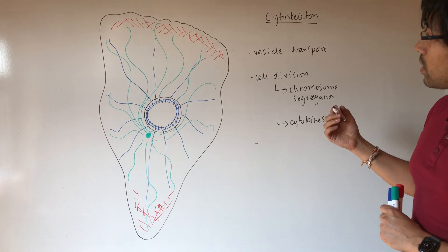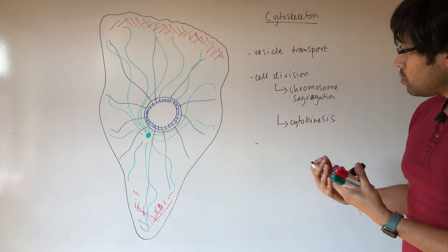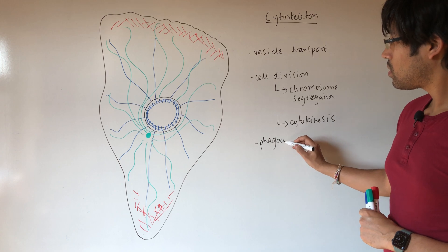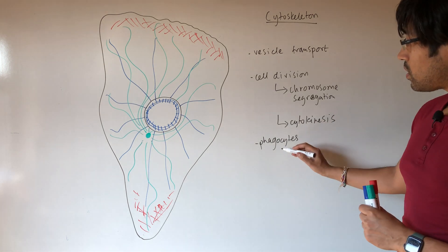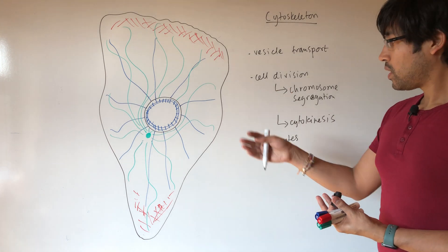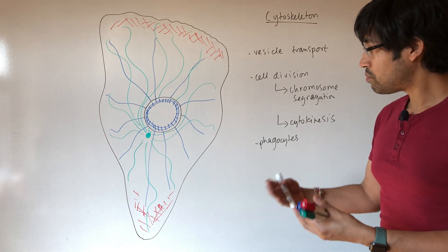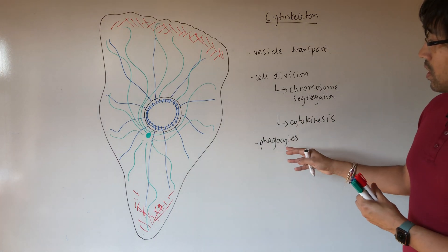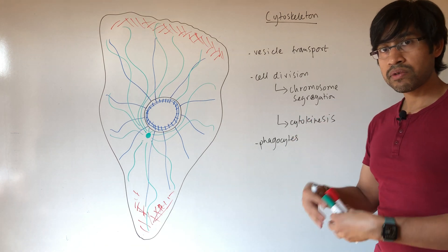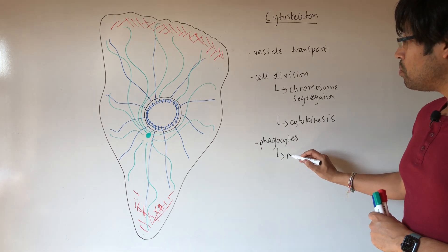When we look at phagocytes, so the cells as part of the immune response, we have phagocytes. Now phagocytes are motile cells. They move throughout the body. They might be moving towards toxins released by pathogens and then engulfing them, carrying out phagocytosis to neutralize that danger. So phagocytes need to be able to move.